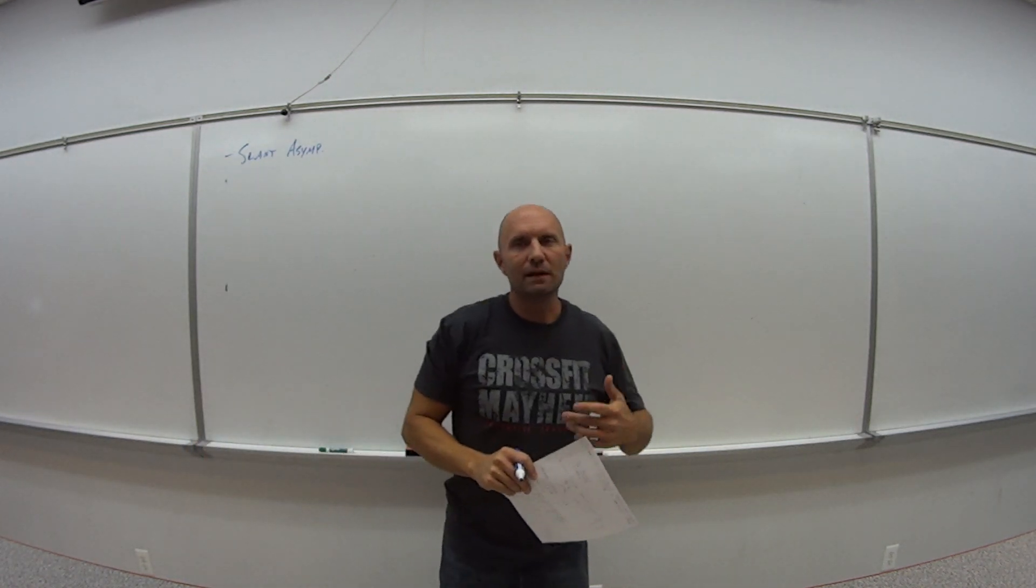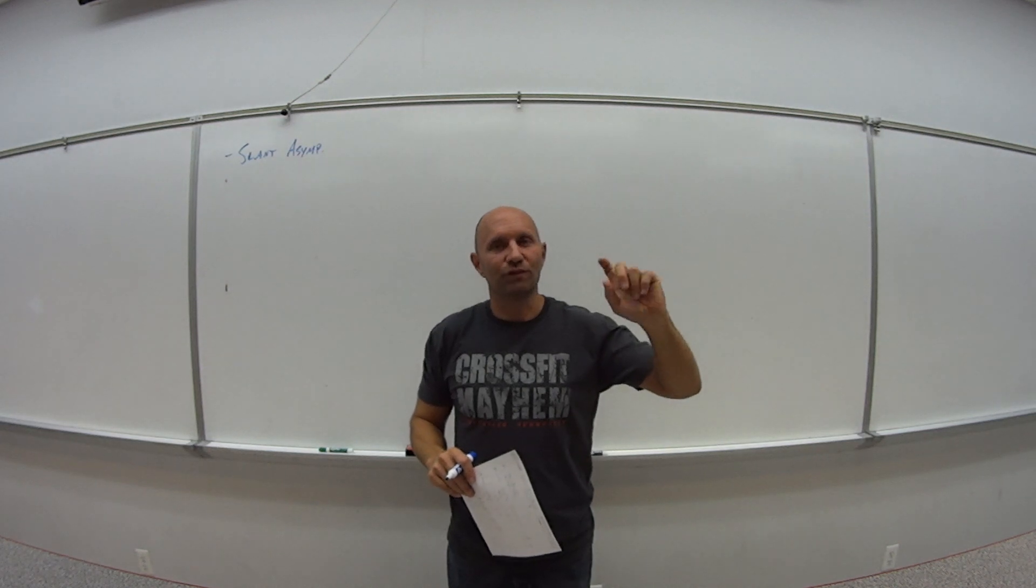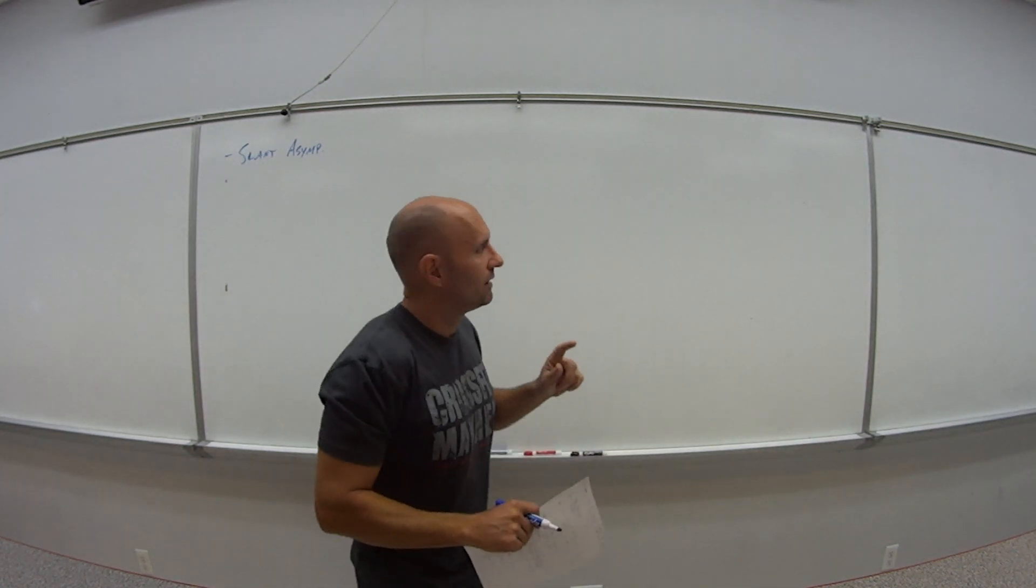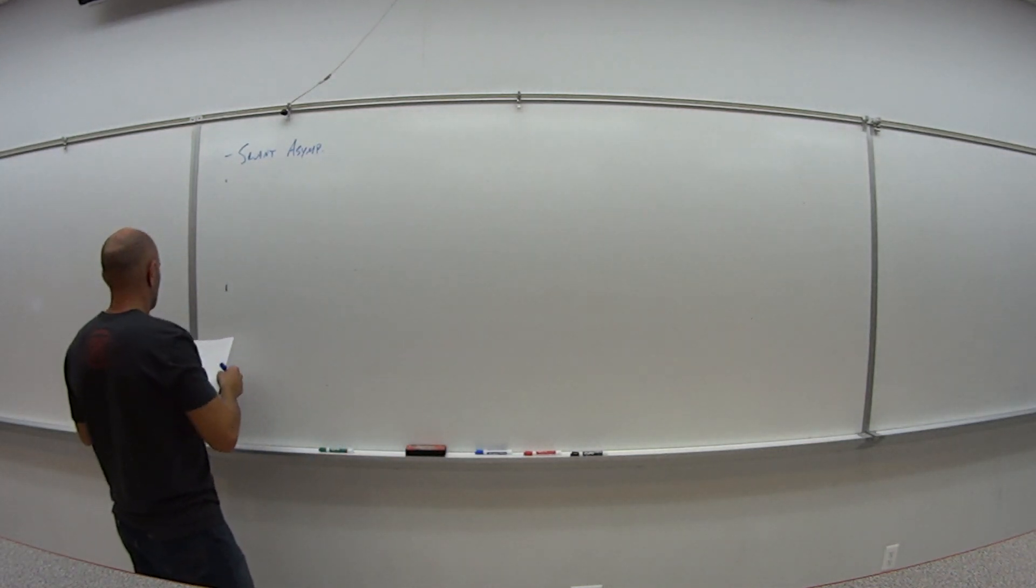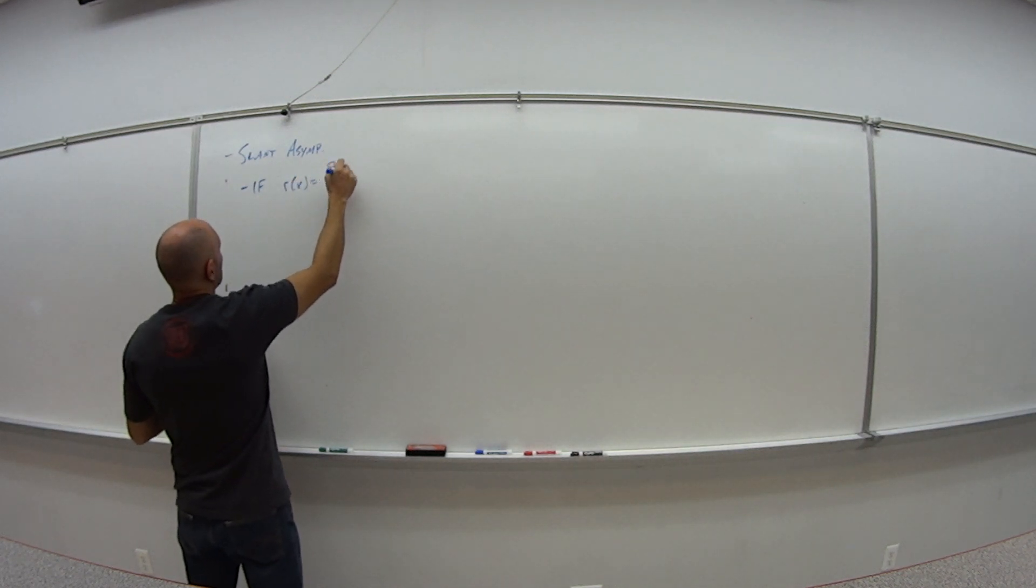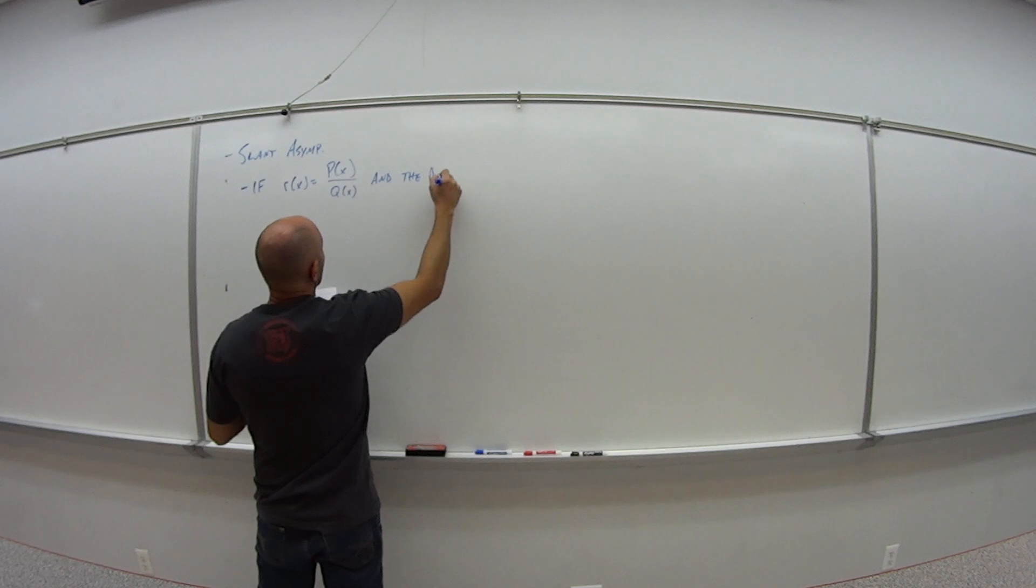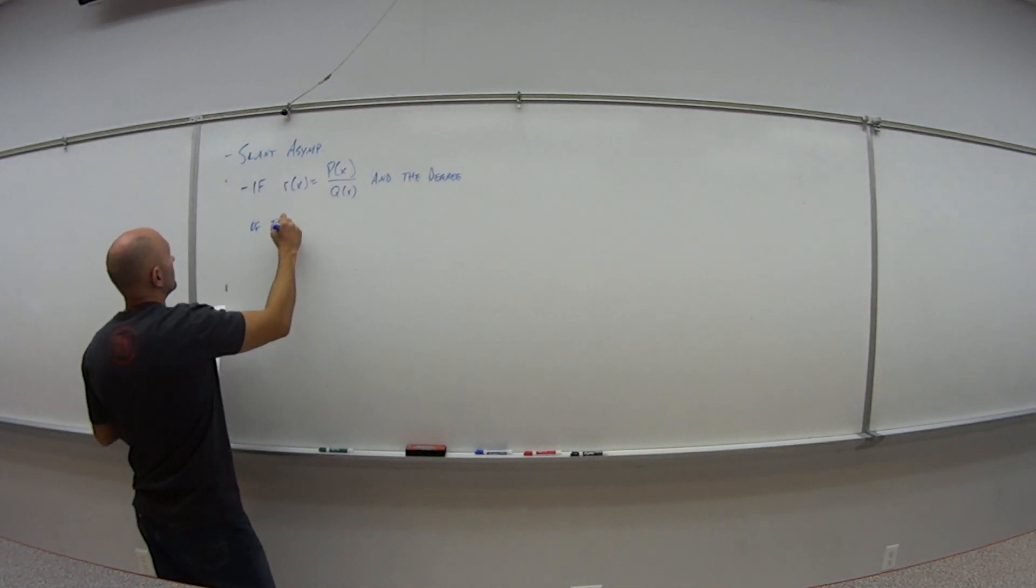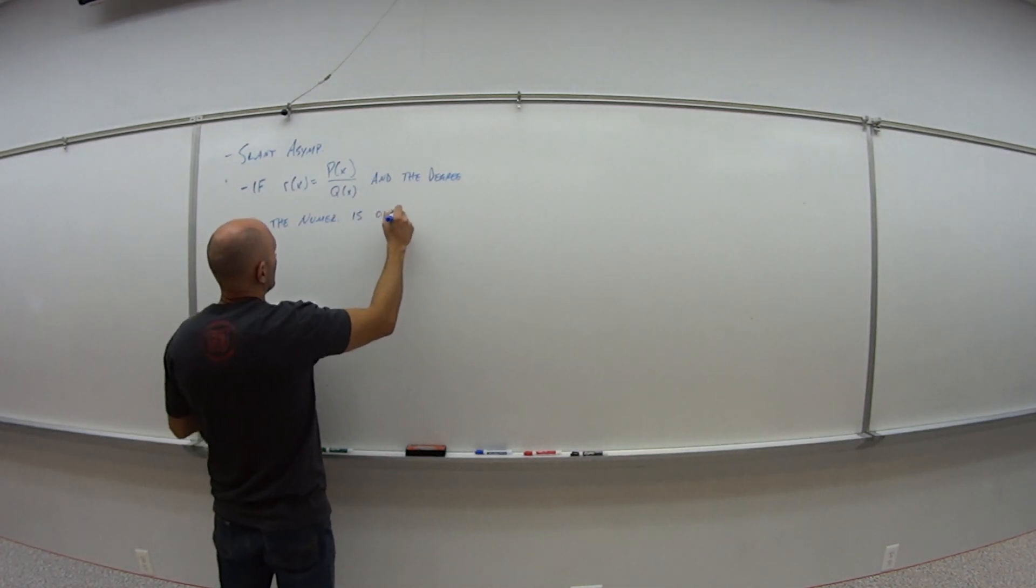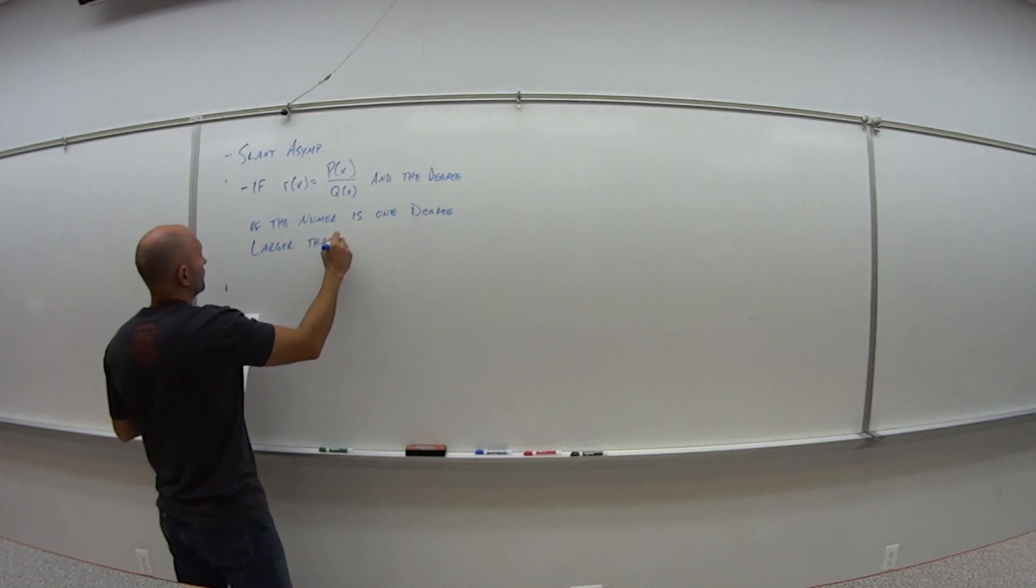So if you remember when I was giving you the, in video 3, the asymptote video, if the numerator was less than the denominator, that was y equals 0. If the degrees were equal, then it was the coefficients. But if the, what was it, the numerator is bigger, then we have an issue, then we get what's called a slant asymptote. So we have, if r of x is some polynomial p of x over q of x, and the degree of the numerator is one degree larger than the degree of the denominator,